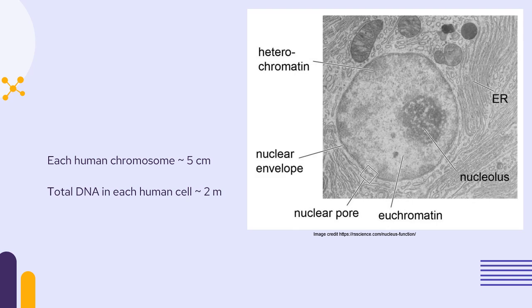Each of our human chromosomes, if we stretched it out—pulled it away from its histone proteins—would be about five centimeters long. That's huge. If we took all our chromosomes out of just one cell and lined them up, we would end up with two meters of DNA in each and every one of our cells.